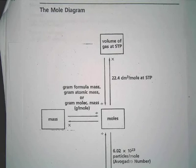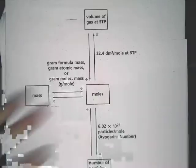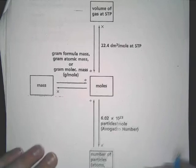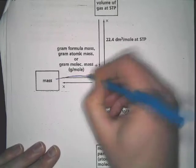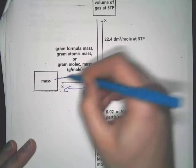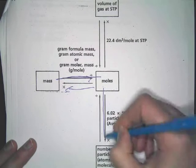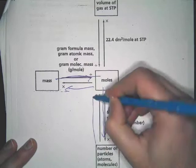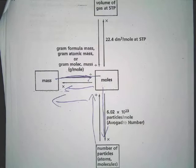Alright, so two-step problems. Now two-step problems entail this: we no longer are just going to be starting at mass and going to moles or going from there. We're going to be doing two steps where we go from mass to moles, then down to particles, or particles up to moles over to mass. Two steps.